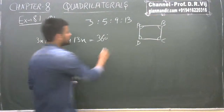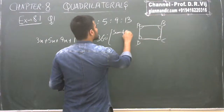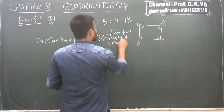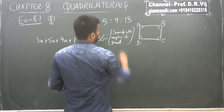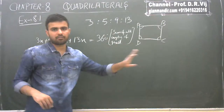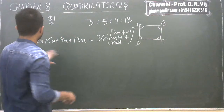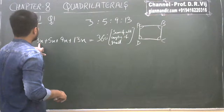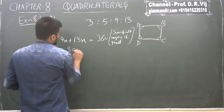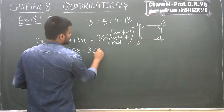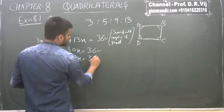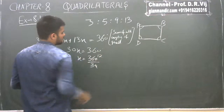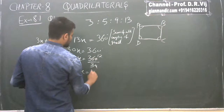The reason is: sum of all angles of quadrilateral equals 360 degrees. If we add these, 13 plus 5 is 18, 18 plus 3 is 21, 21 plus 9 is 30. So 30x equals 360 degrees, which gives x equals 360 divided by 30, which comes out to be 12 degrees.